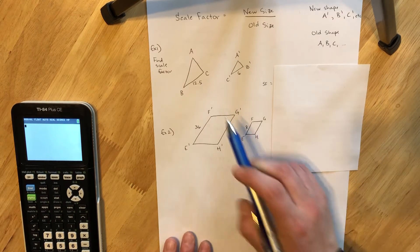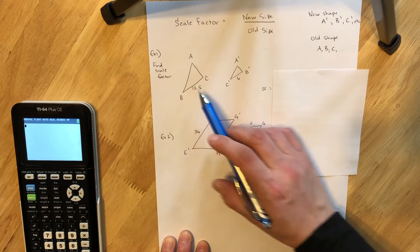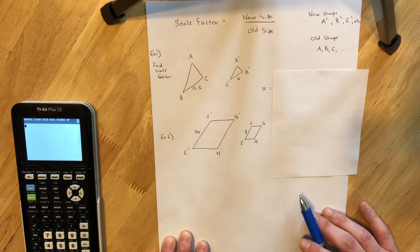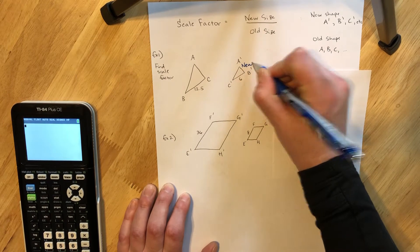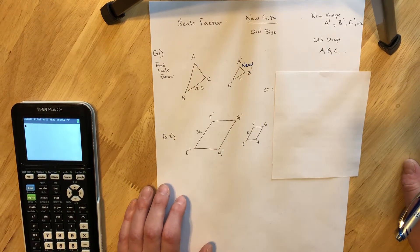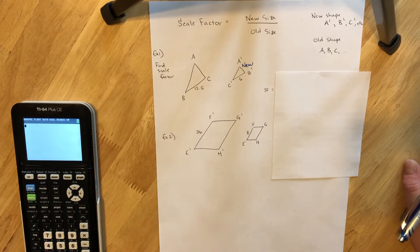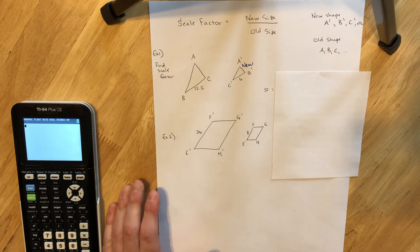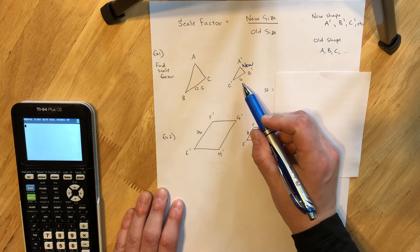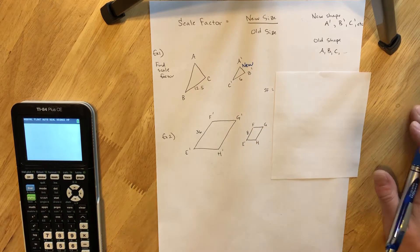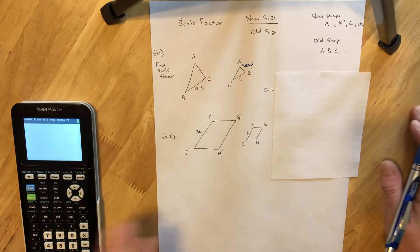So here in example one we're taking a look at triangle ABC and then A prime B prime C prime. So with all of those primes there, this is the new shape. And so for us to find that scale factor, we need to take a value or a size or length from that new shape and divide by the corresponding length on the old shape.